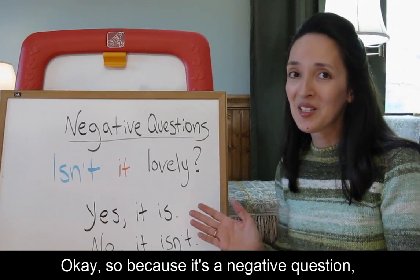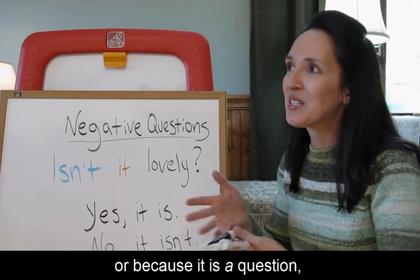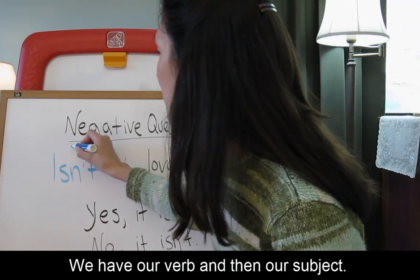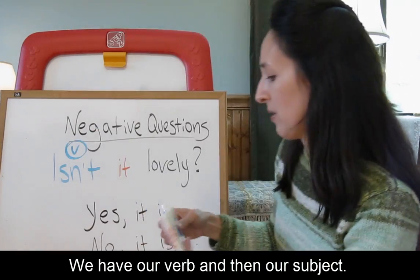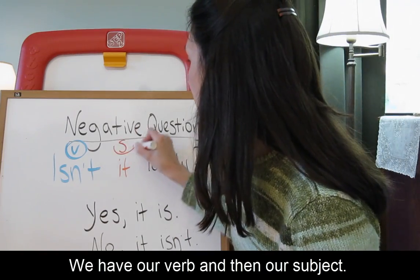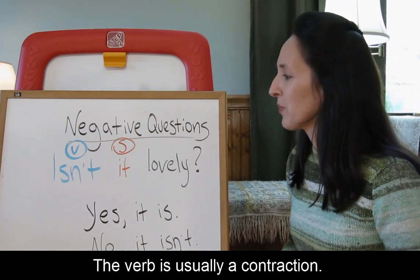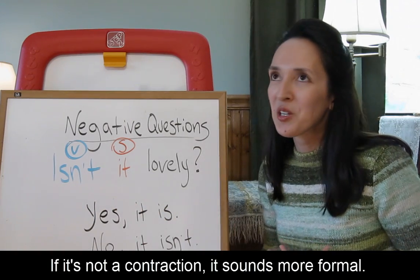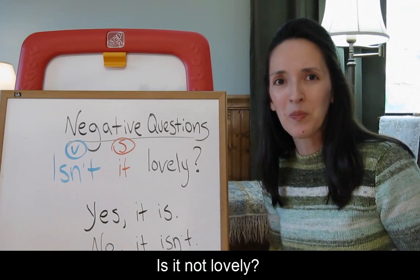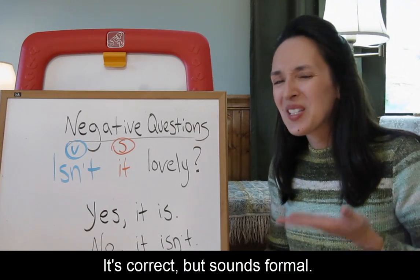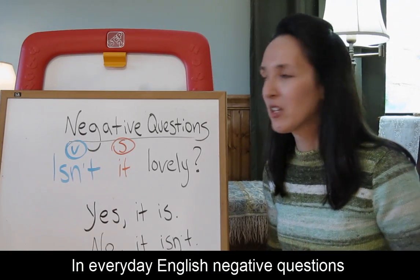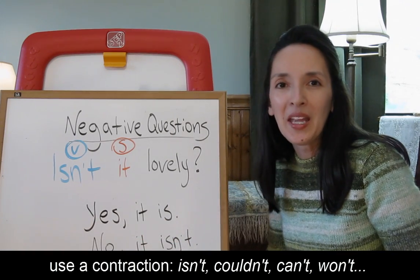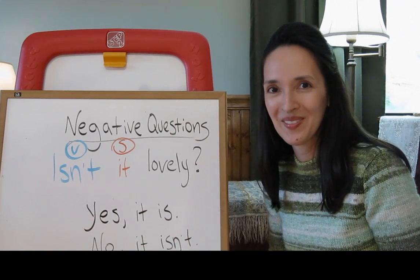So because it is a question, we're using question word order. We have our verb and then our subject — question word order. The verb is usually a contraction. If it's not a contraction, it sounds more formal: 'Is it not lovely?' It's correct, but sounds formal. In everyday English, negative questions use the contraction: isn't, couldn't, can't, won't.